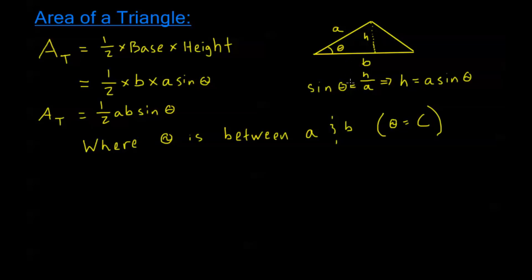This area of a triangle formula isn't just limited to these acute triangles. Let's say I take a look at an obtuse triangle. Something like this. So let's say this is my triangle. Let's say this is my a, this is my b, and this is my theta. So we can see this isn't just going to be limited to acute angles here.